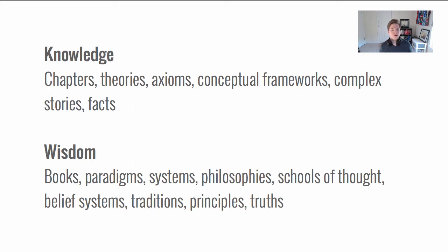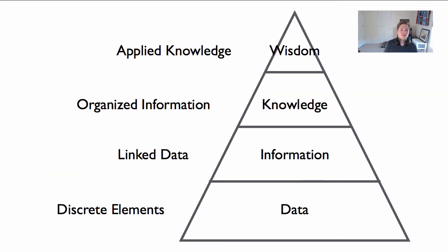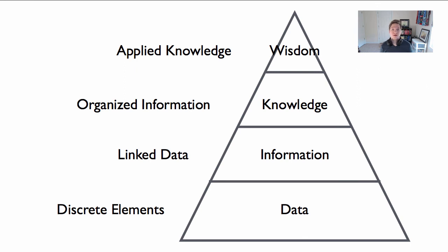And then wisdom — chapters make up books and so on. From your reading, you know that these interact in a pyramid. A pyramid is a great shape for this because there is a ton of data and a lot less wisdom. What I like about this is being able to define each layer by the one below it. Data is the smallest level — discrete elements. We can think of information in terms of data. Linked data is information: we take different pieces of data and link them together. We then organize that information to create knowledge, and we apply it in a way to create wisdom.